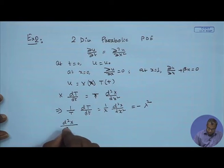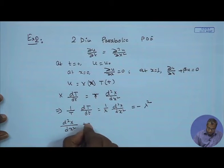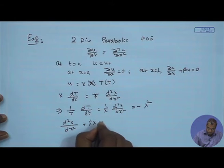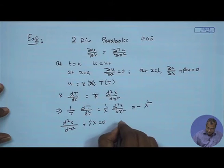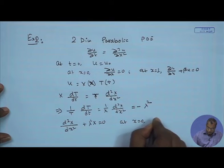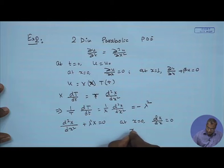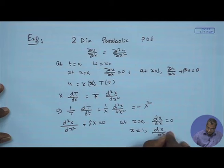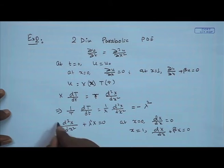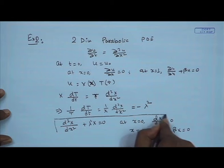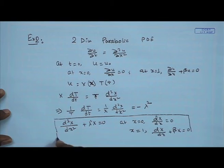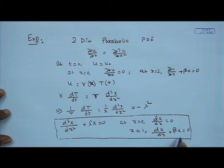We constitute the eigenvalue problem in the x direction: d²X/dx² + λ² X = 0, with boundary conditions dX/dx = 0 at x=0, and dX/dx + beta X = 0 at x=1. This formulates the standard eigenvalue problem in the x direction.